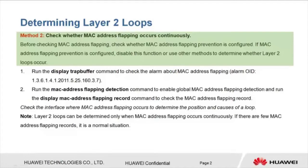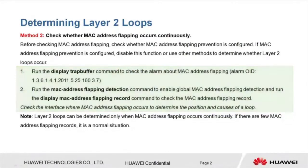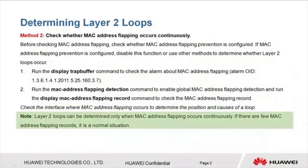One: Run the 'display trap buffer' command to check the alarm about MAC address flapping. If there are many alarms, search for the alarm based on the alarm OID. The alarm OID is 1.3.6.1.4.1.2011.5.25.160.3.7. Two: Run the 'mac-address flapping detection' command to enable global MAC address flapping detection, and run the 'display mac-address flapping record' command to check the MAC address flapping record. We can only determine Layer 2 loops when MAC address flapping occurs continuously. If there are few MAC address flapping records, this is normal.